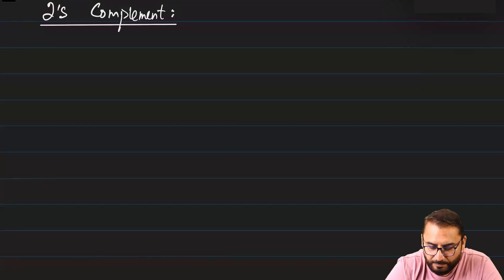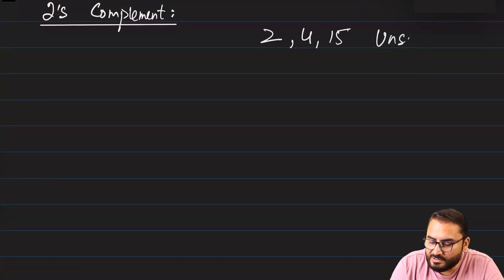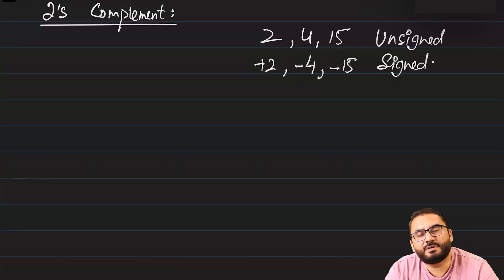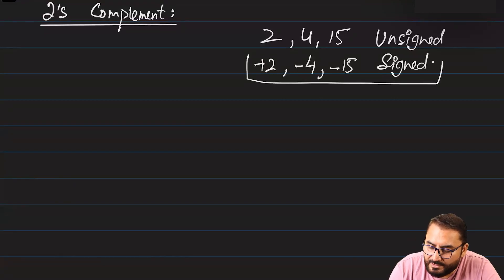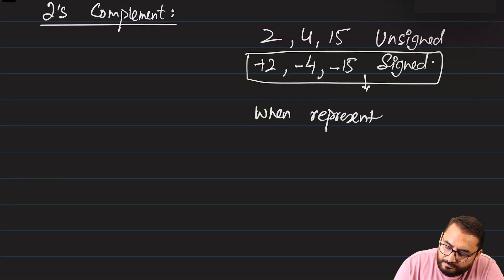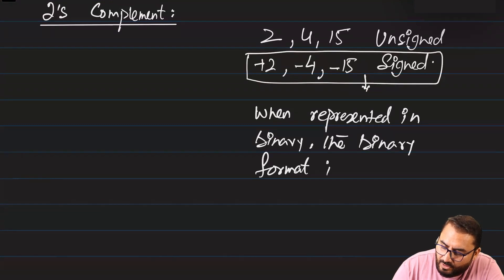2's Complement in binary is basically the signed number. So if you are making 2, that is an unsigned number. If you are making 4, that is unsigned. 15 would also be unsigned. These are unsigned. But if you want to write plus 2, or minus 4, or minus 15, these are signed numbers. Signed numbers in binary are called 2's Complement. So these numbers, when represented in binary, the binary format is called 2's Complement.